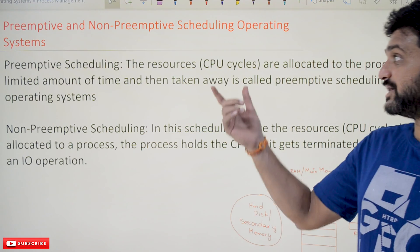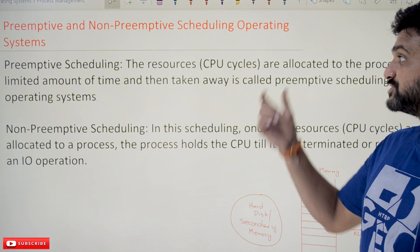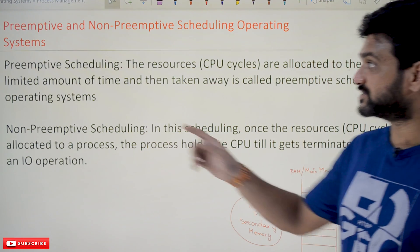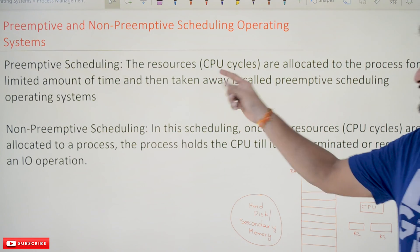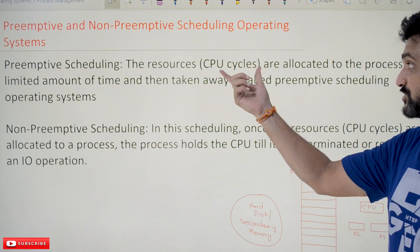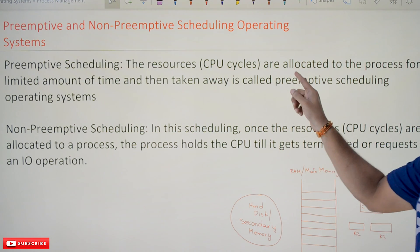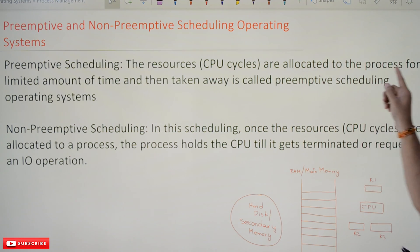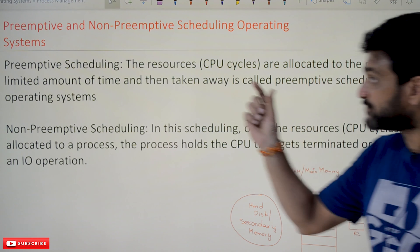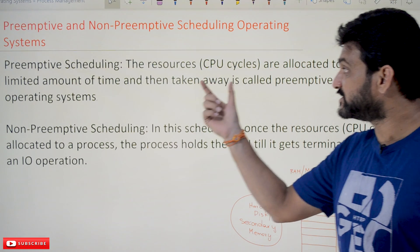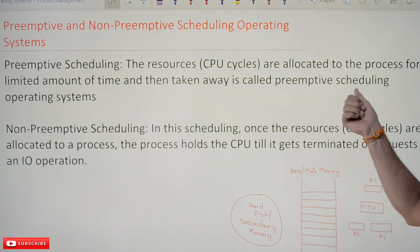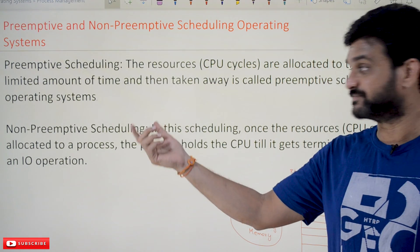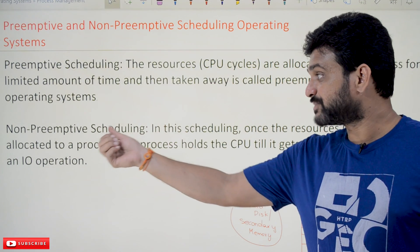Now let's understand preemptive scheduling. In preemptive scheduling, the resources — which means CPU cycles — are allocated to the process for a limited amount of time and then taken away. That is called preemptive scheduling in operating systems.